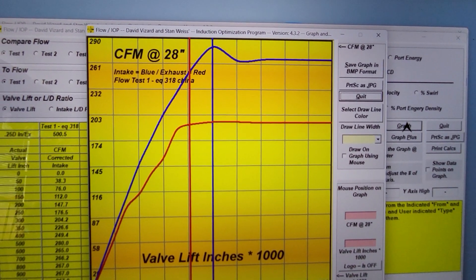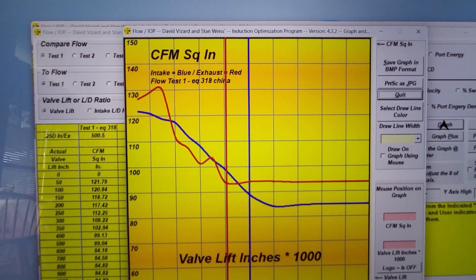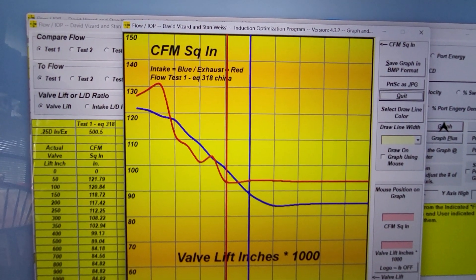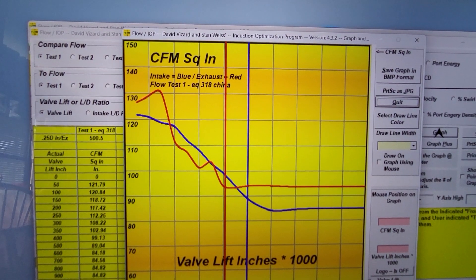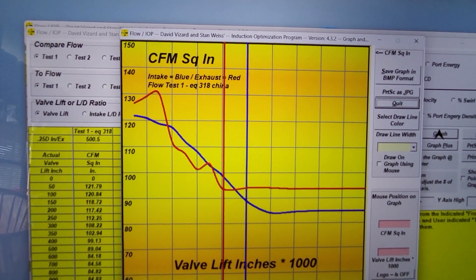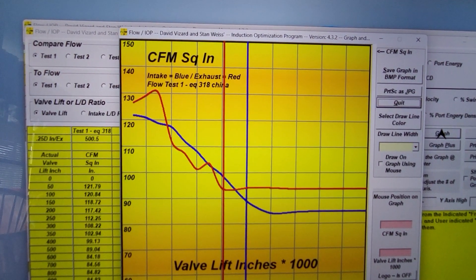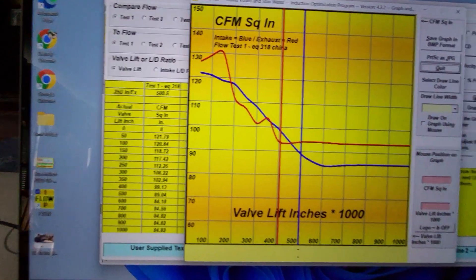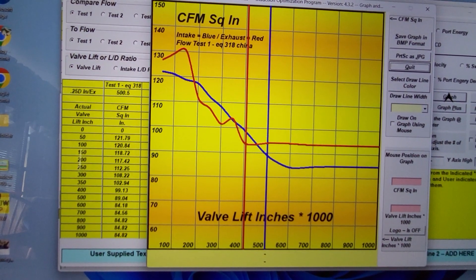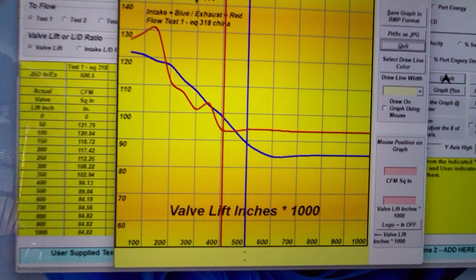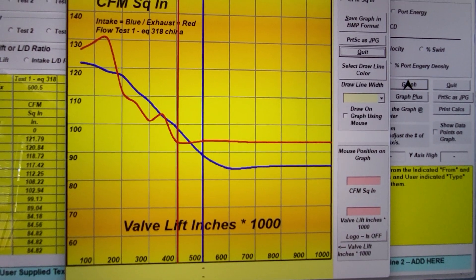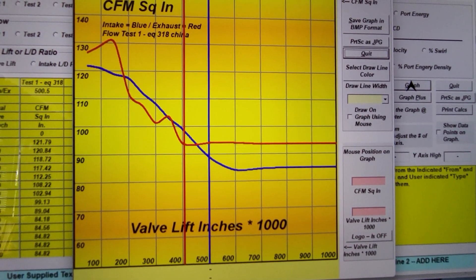Our CFM per square inch tells us how effective our valve seat shapes are. This did not have a super fancy valve job but I did a nice job on it. You can see the exhaust that has my radius on it is pretty darn effective, 130, not bad. As DV would say, see how those lines flatten out towards the end? He considers that not having enough bias.